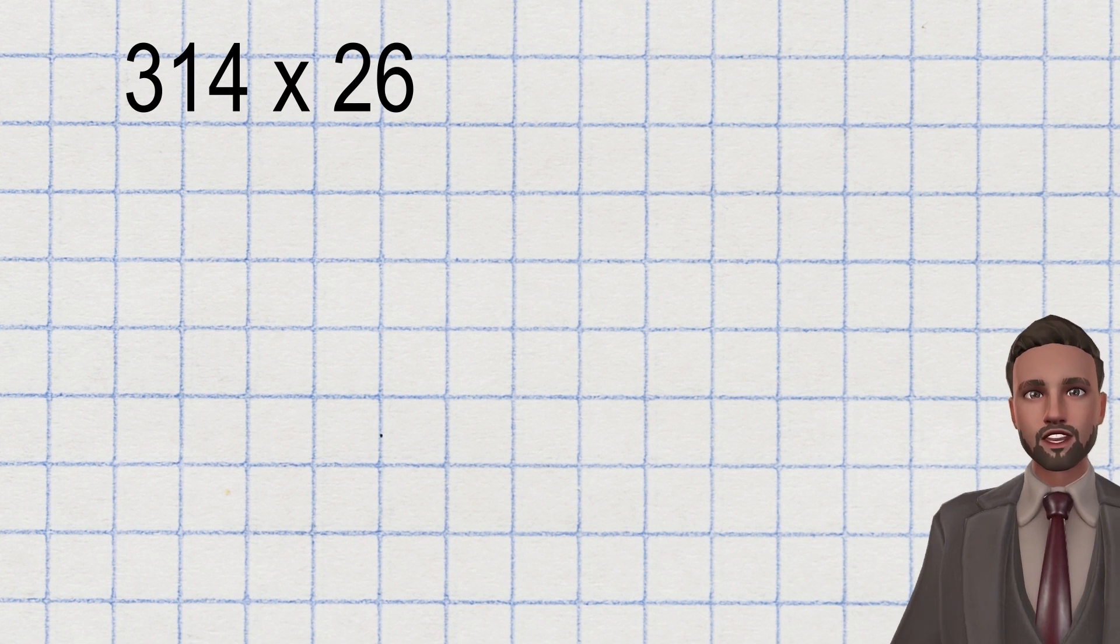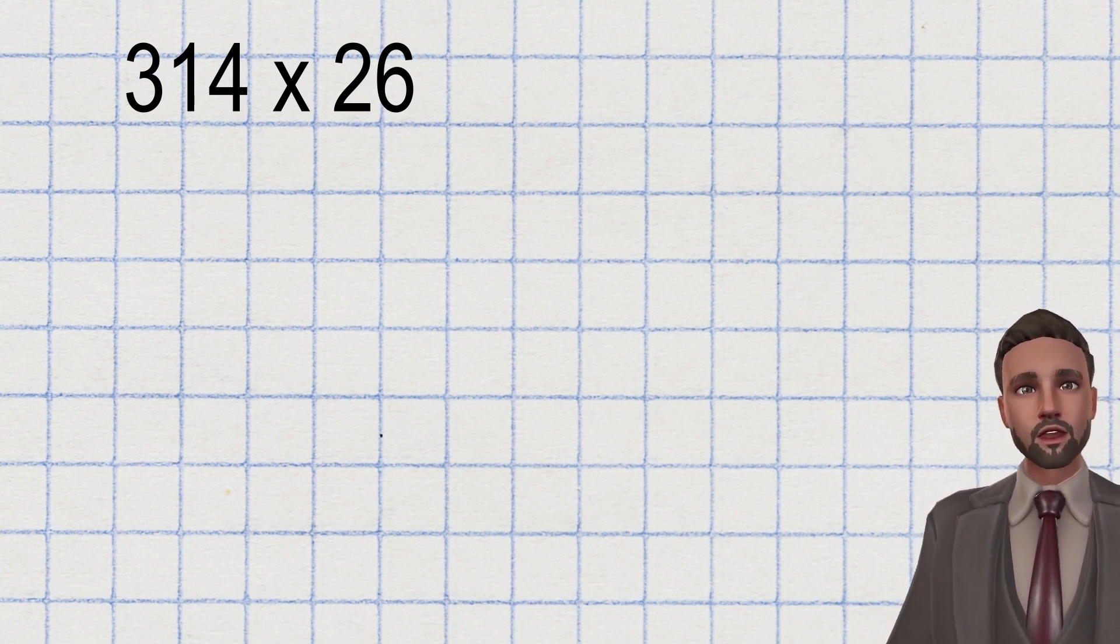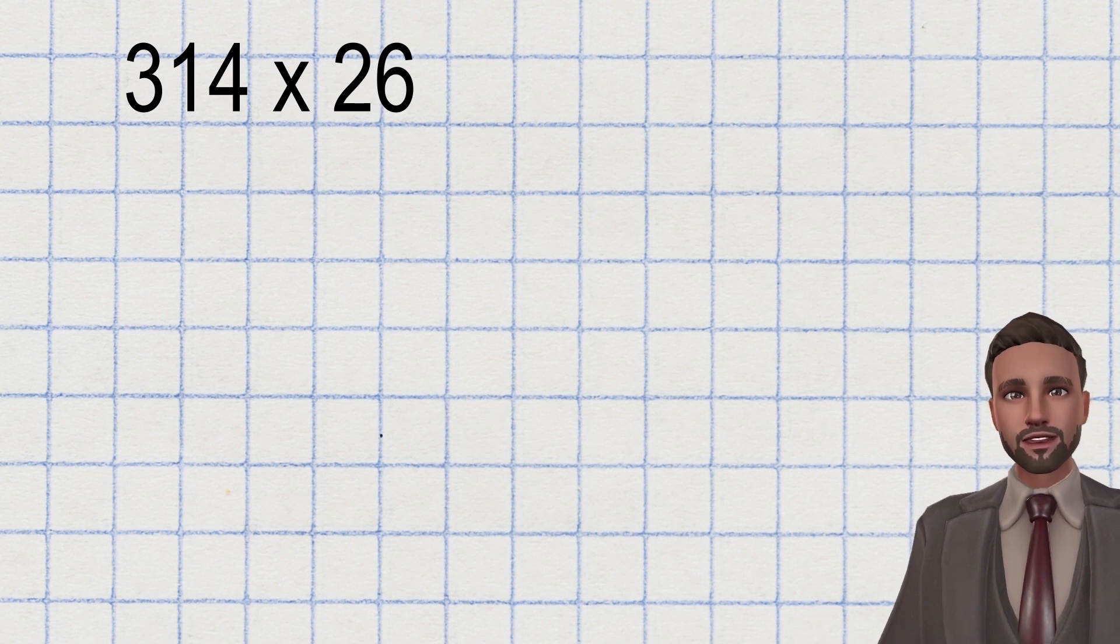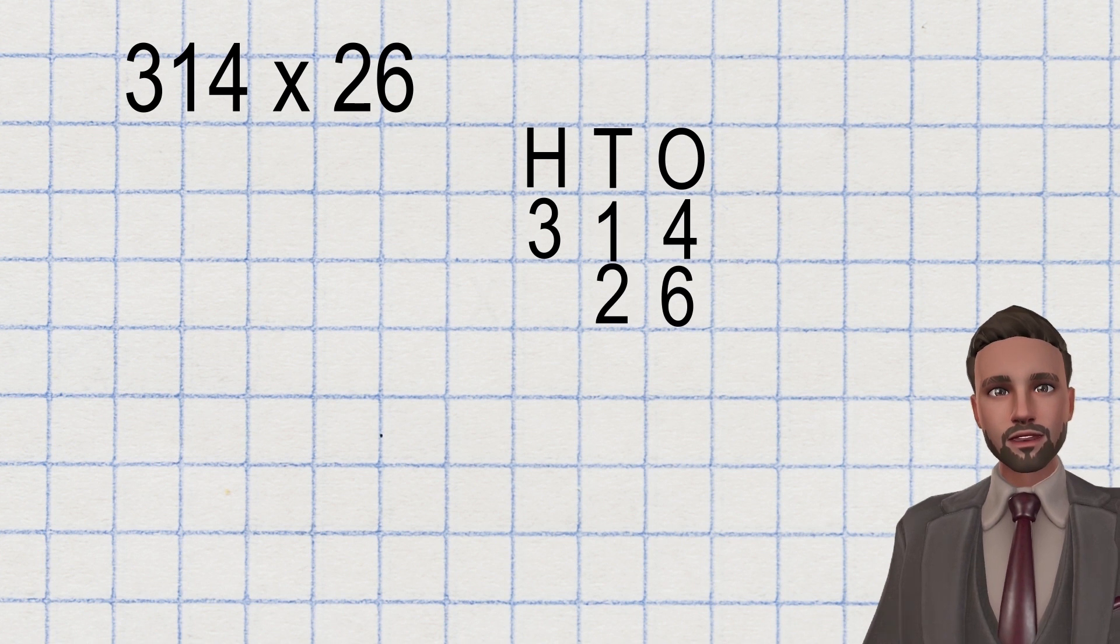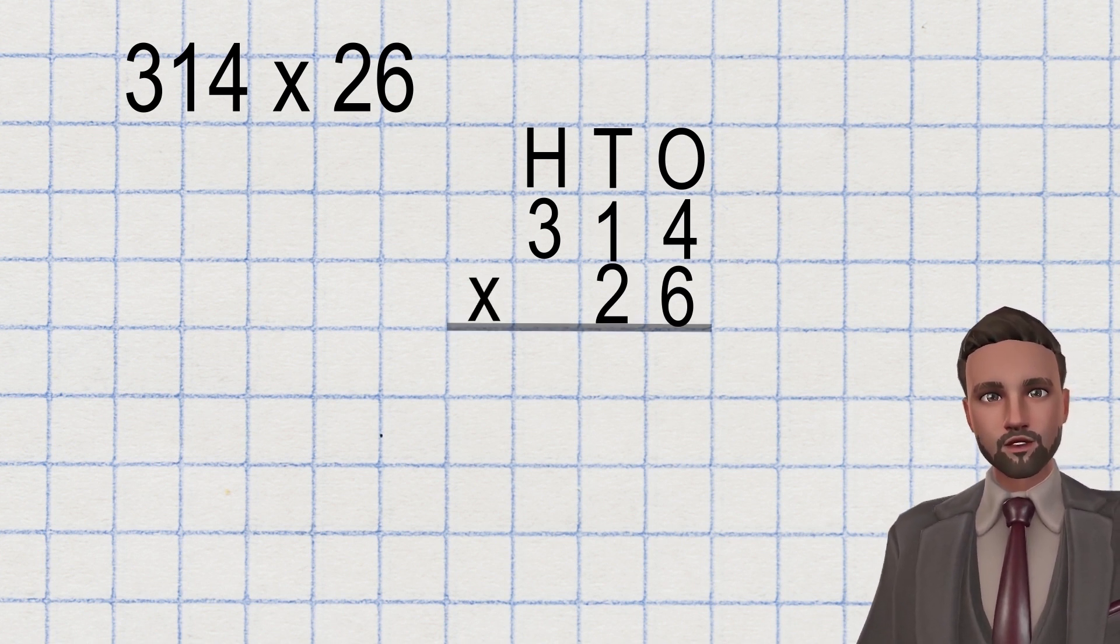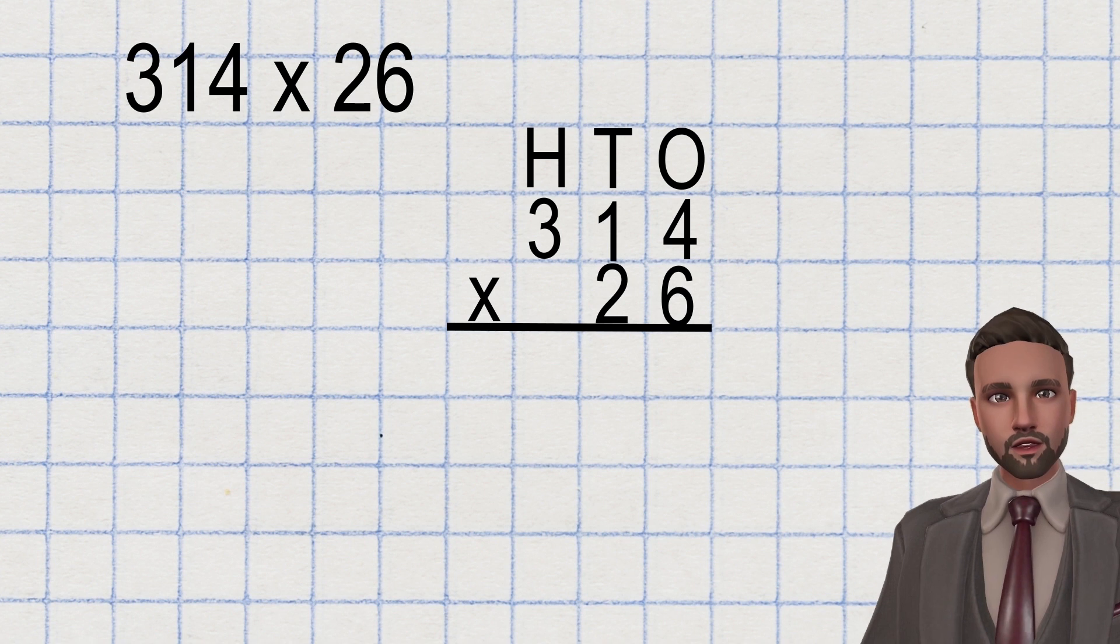Here we have the question 314 multiplied by 26. We're going to tackle this question just like we did with part one. We're going to put our place value columns down before writing our equation out. 314 on the top, 26 beneath, followed by the multiplication symbol to the left and ruling off to represent where our answer line will go.